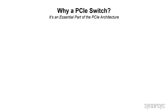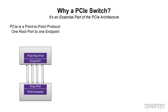It's an important and essential part of the PCI Express architecture. PCI Express is essentially a point-to-point protocol. There's one root port, sometimes referred to as root complex, that talks to one endpoint. And as you can see from this diagram, that's pretty limiting. If that's all there was for PCI Express, PCI Express would not be the pervasive architecture that it is today.